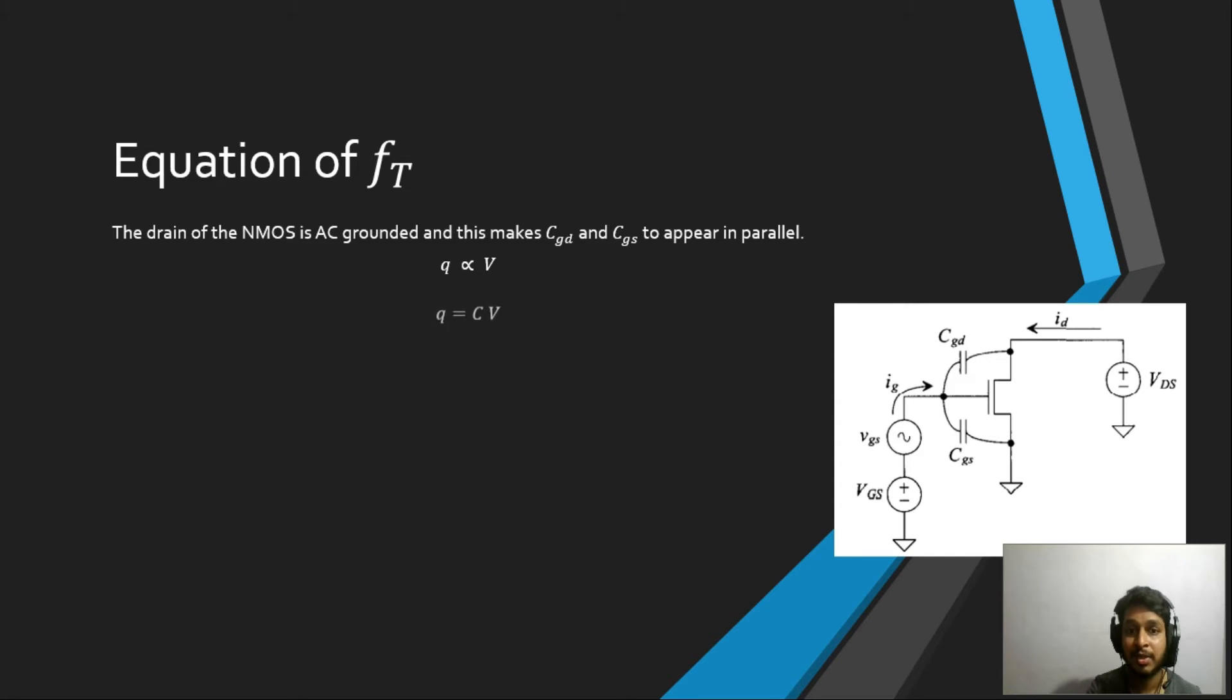If you consider a linear time-invariant system, for a linear system we can introduce a constant called C, where Q is equal to C times V, where C is capacitor. That's how we define the capacitor. So if we apply that equation here, we will have the Q, the charge stored in both CGD and CGS, will be equal to CGS plus CGD times the voltage VGS.